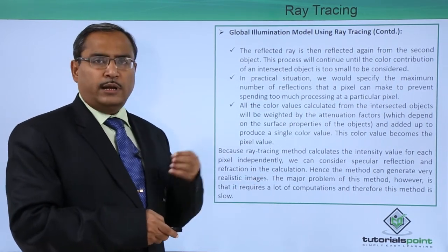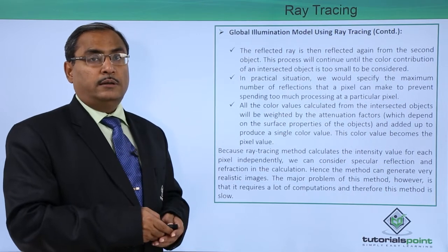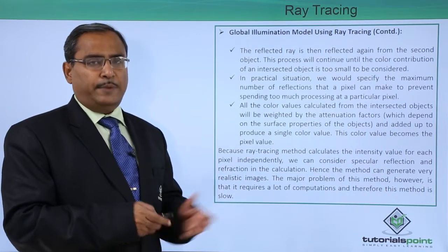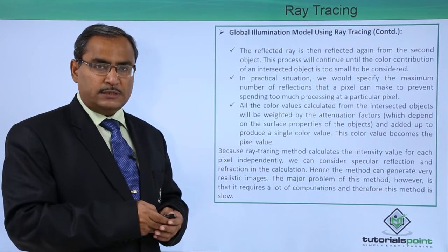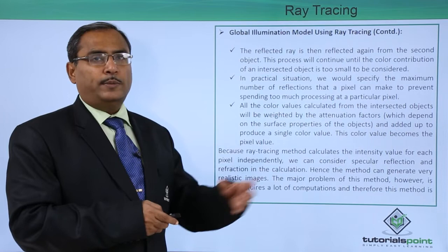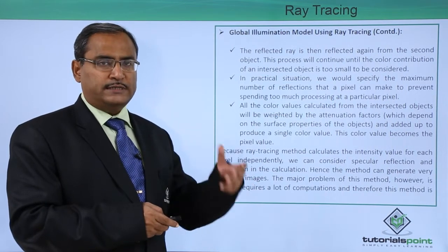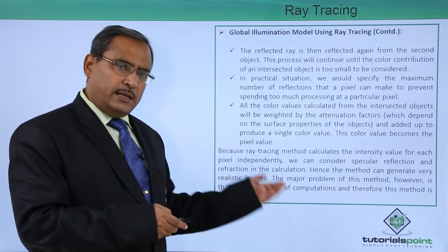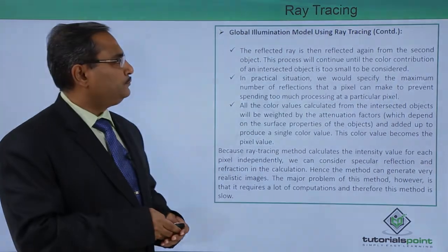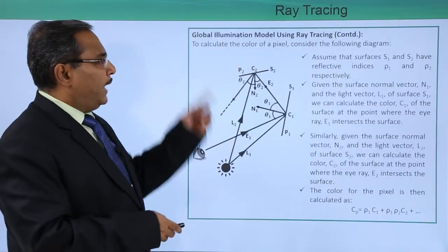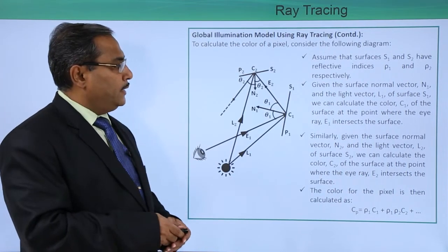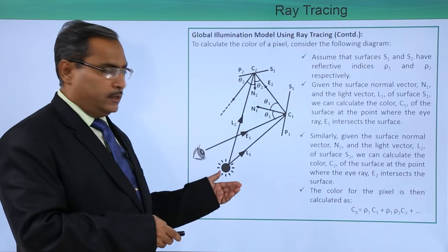Depending upon the upper bound of calculations, the intensity contributions, and the number of reflections considered, whatever the case, due to the huge computation the response will be slow. Now, to calculate the color of a pixel, consider the following diagram.